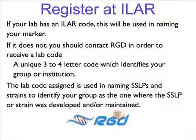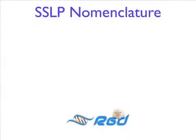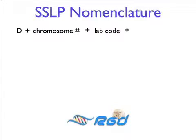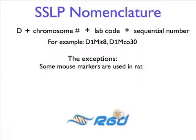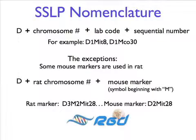For more on the use of lab codes in naming strains, please view our tutorial on strain nomenclature. A rat simple sequence length polymorphism, or SSLP, is named in the format D for DNA fragment, chromosome number, lab code, and then a sequential number — for example, D1MIT8. There are some exceptions: some mouse SSLPs are also used in rat, in which case the symbol is constructed as D, then the rat chromosome number, followed by the symbol of the mouse marker. The systematic nomenclature assigned by RGD is picked up by other databases, such as UniSTS, when they download our files.